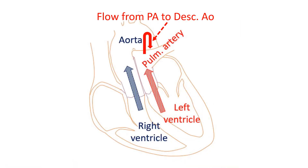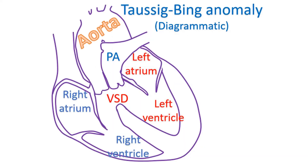Reverse differential cyanosis, with cyanosis of upper limbs and no cyanosis of lower limbs, occurs in more complex congenital heart diseases. It can occur in complete transposition of great arteries or Taussig-Bing anomaly with reversal of ductal flow due to severe pulmonary hypertension. Taussig-Bing anomaly is double outlet right ventricle with sub-pulmonic ventricular septal defect along with transposition of the aorta to the right ventricle and malposition of the pulmonary artery.